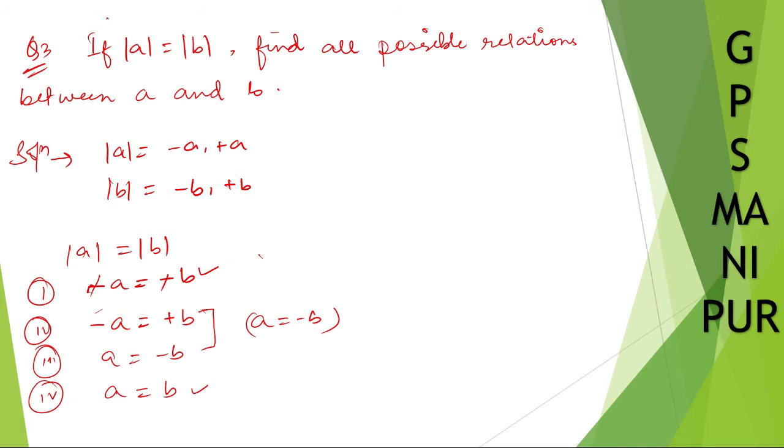So, therefore, possible relations. All possible relations between A and B are, let me...